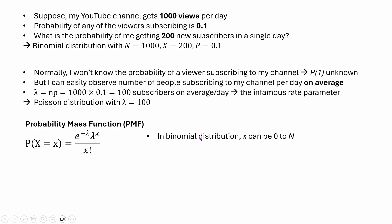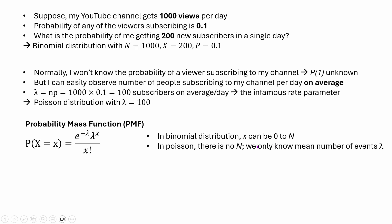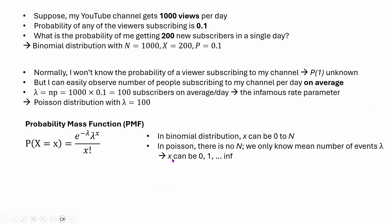One very important concept: in binomial distribution, the random variable x can range from 0 to n, where n is the number of trials — the total number of trials, whether unsuccessful or successful. Here n is equal to 1000. But for Poisson distribution, we actually don't know the value of n; we only know the rate, so there is no upper bound. That is why x, the number of successful events, can be anything — for example, the number of new subscribers can be anything from 0 to infinity in a single day.